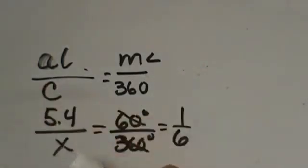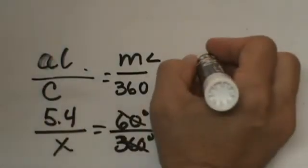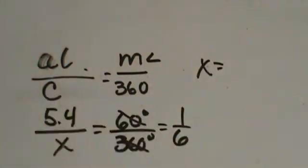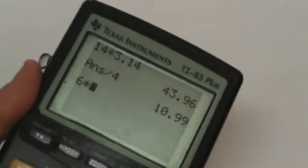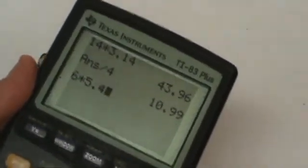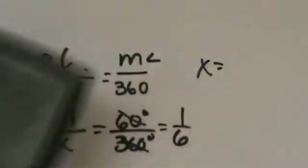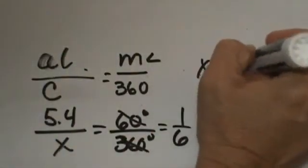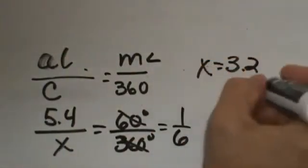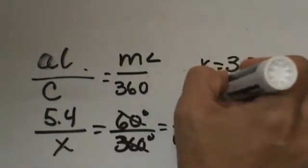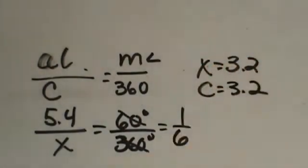Let's do cross products. We get 1 times x or just x, and then 6 times 5.4. I am going to grab my calculator and do 6 times 5.4 and I get 32.4. So 32.4 is actually equal to my circumference because x is equal to circumference.